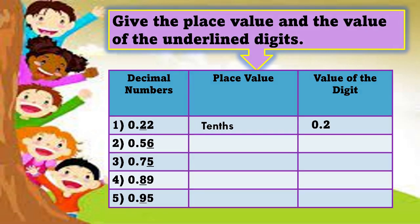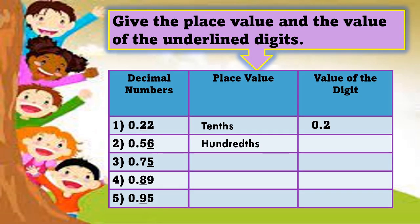Let's go to number 2: 0.56. The underlined number is 6. What is the place value of 6? That's correct — hundredths. And the value of the digit is? Very good: 0.06.